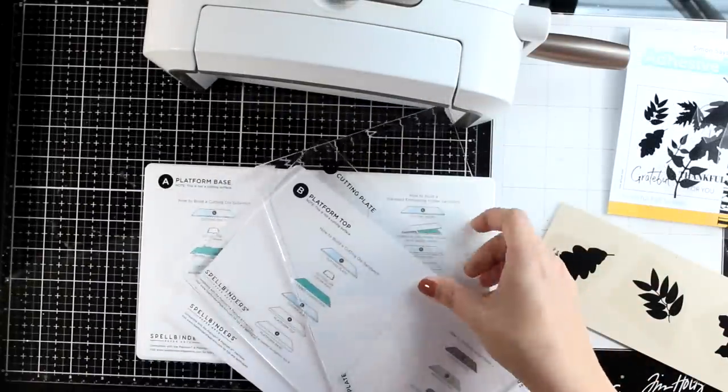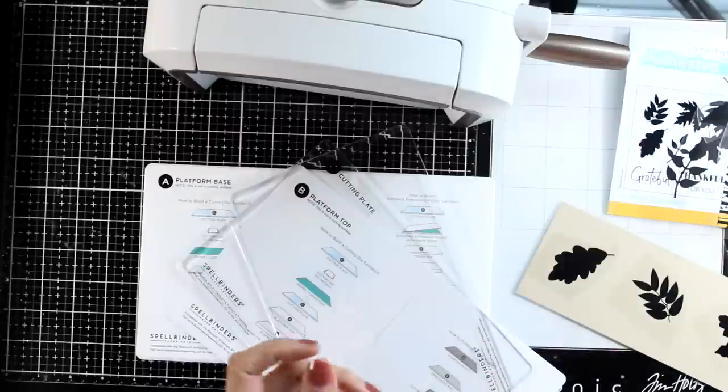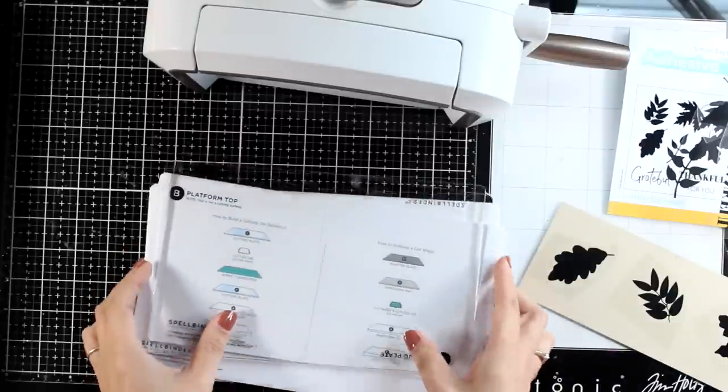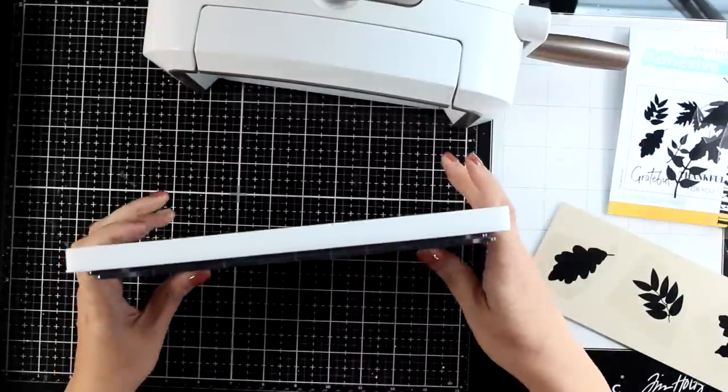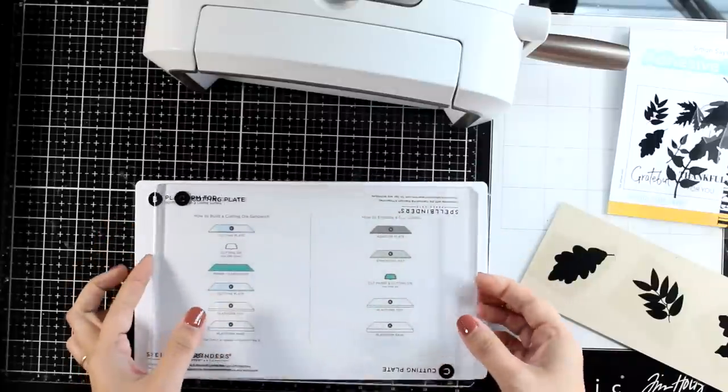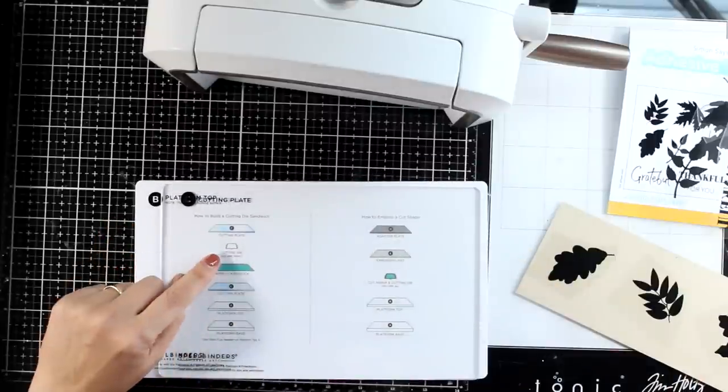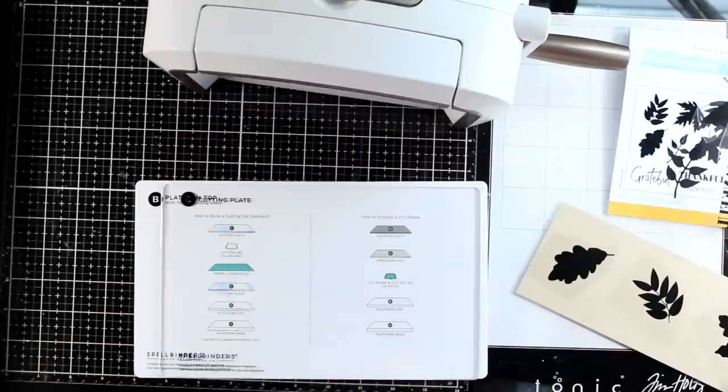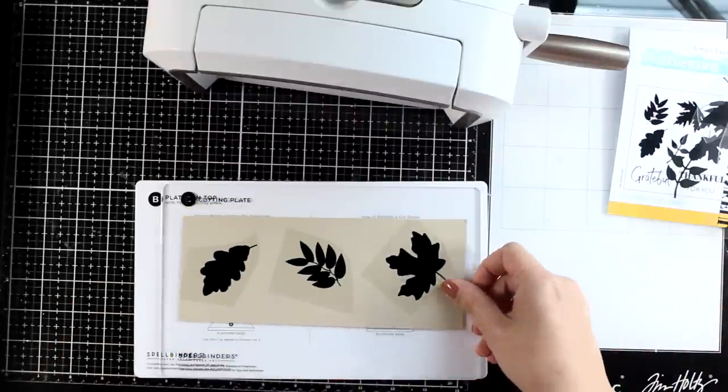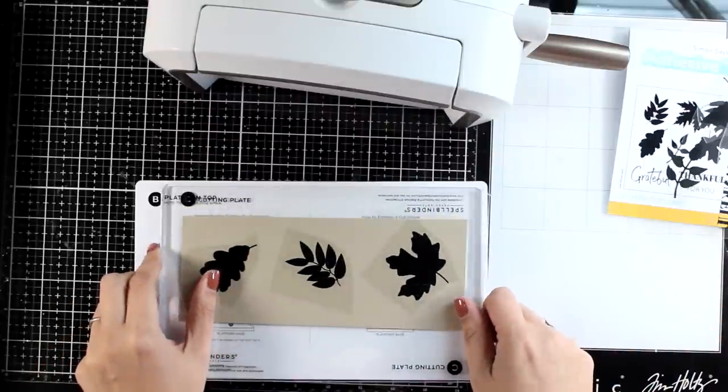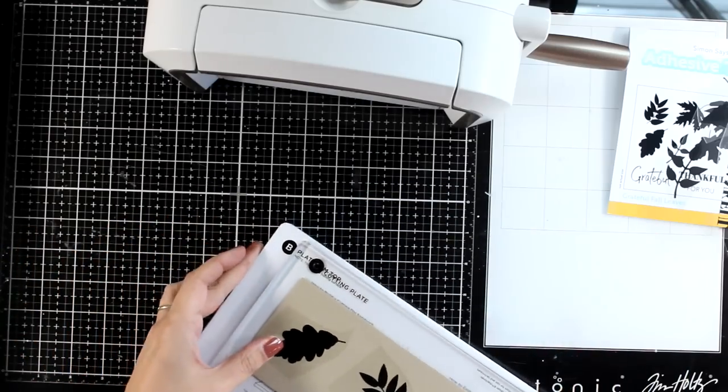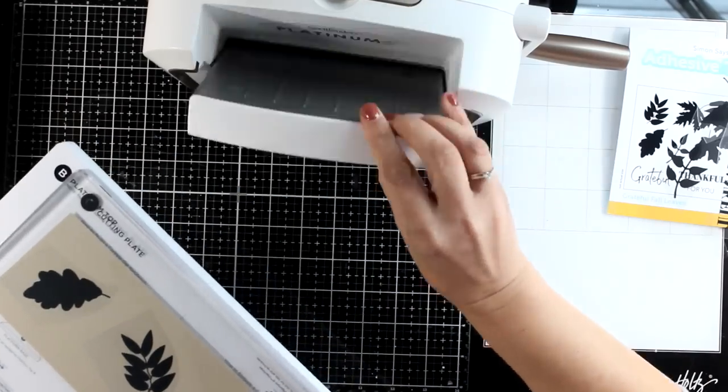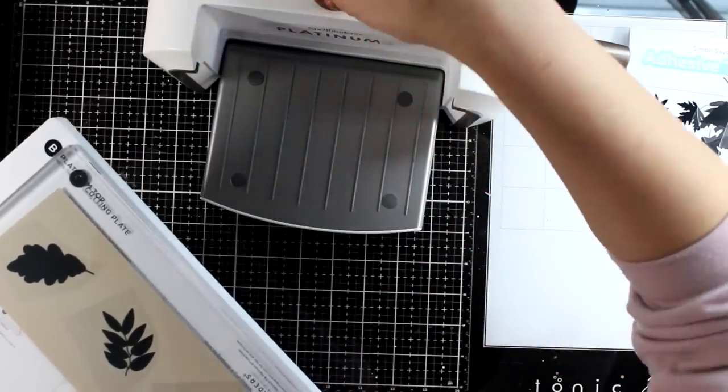Now I'm going to use my spare binders die cutting machine. I'm creating my sandwich here - I do have the new universal plates, but no matter which die cutting machine you have, just create your regular sandwich, the one that you would use to use the thin dies. So then place the cardstock and the top plate on top, and I'm just going to run it through my die cutting machine.